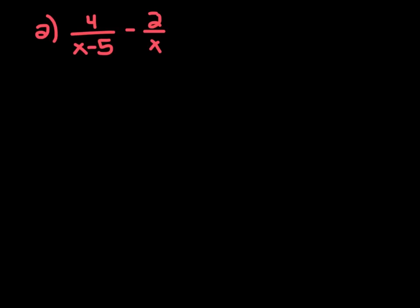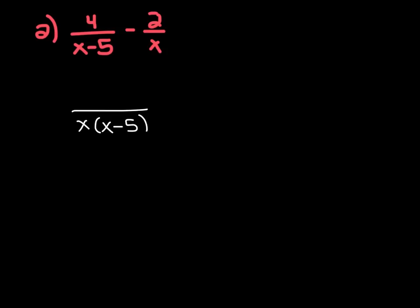So for number 2, when we look at our denominators, we have an x minus 5 and an x. There's nothing you can really multiply this x by to get x minus 5, and keep in mind you're not allowed to just subtract 5 from the numerator and denominator because then our fraction wouldn't be equivalent. So what we're going to have to do is multiply the denominator of the first fraction by x and the denominator of the second fraction by x minus 5, so our common denominator will include both of them. Our common denominator is going to be x times x minus 5.